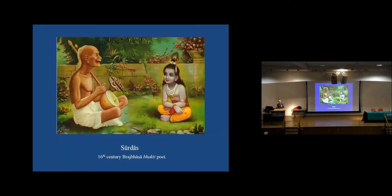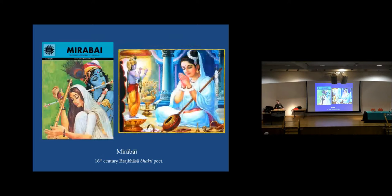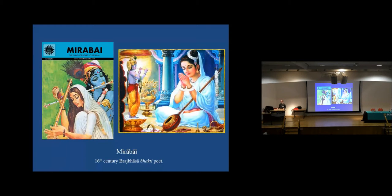When we talk about Braj Bhasha, certain iconic images come to mind immediately — iconic images of Vaishnava Bhakti poets like Surdas and, perhaps even more iconic, Mirabai. And especially in connection to both poets, the image of Krishna, the flute-playing young cowherd and adolescent in the Braj Bhoomi.